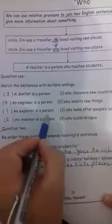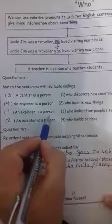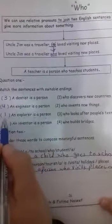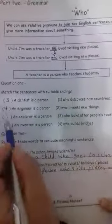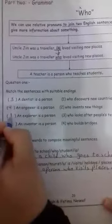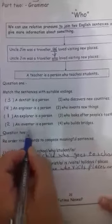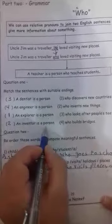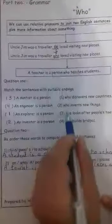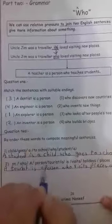'An explorer is a person' — yes, the answer is number one — 'who discovers new countries.' Write one here. Now the last sentence: 'An inventor is a person' — yes, number two — 'who invents new things.' Write number two here.